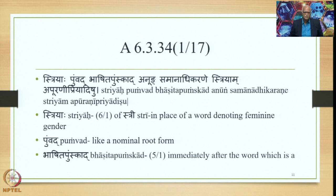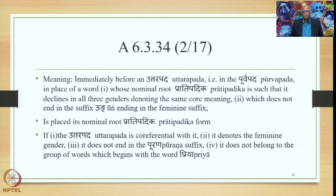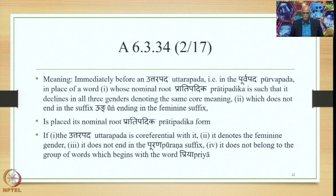Stryaha is sixth case singular — in place of a word denoting feminine gender. Pumbat means like a nominal root form. Bhashita Pumsaka is Panchami Ekavachana — immediately after the word which is a Bhashita Pumsaka. The overall meaning of the sutra: immediately before an Uttarapada, that is in the Purvapada, in place of a word whose nominal root declines in all three genders denoting the same core meaning and which does not end in the suffix Oom ending in the feminine suffix — is placed its nominal root, that is Pratipadhika form.